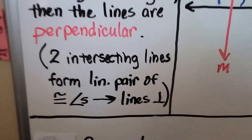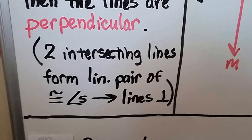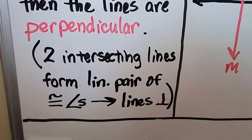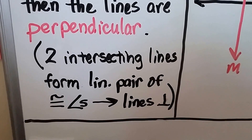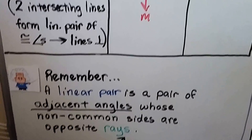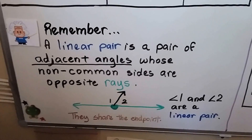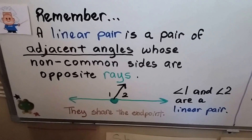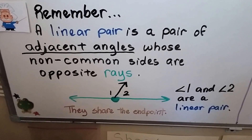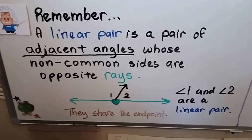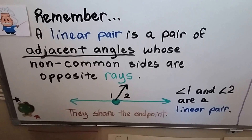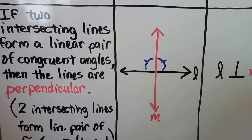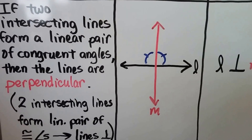We can write it in a proof as: two intersecting lines form a linear pair of congruent angles — using the congruent symbol, the angle symbol — and our arrow to the right means therefore, lines and the perpendicular sign. A linear pair is a pair of adjacent angles — angles that are next to each other — whose non-common sides are opposite rays. We have a ray heading to the right and a ray heading to the left, sharing the endpoint in the middle. Angle 1 and angle 2 are a linear pair, so when two intersecting lines form a linear pair of congruent angles, the lines are perpendicular.